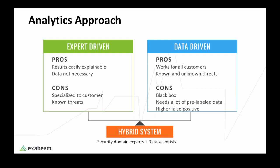After we massage the raw data logs into sessions, how do we use data science to produce anomalies as output? At Exabeam, we don't believe in a pure data-driven approach. Our philosophy is that a data-driven engine must be fortified with expert-driven knowledge to have an optimal UBA system. There is a lot of hype that data science can somehow produce insights directly from data like magic, but it is not a cure-all. Some use cases, like deep learning for image and language processing, are well suited for a pure data-driven approach.